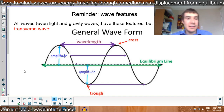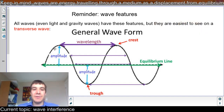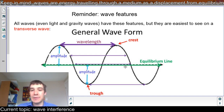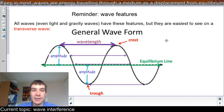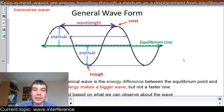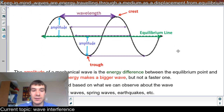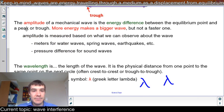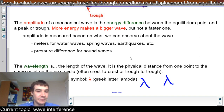Let's start with interference. As a reminder, we have these features of a wave: amplitude, wavelength, crest, trough, and an equilibrium. All waves are energy traveling through a medium with a displacement from equilibrium — whether it's a physical distance like in a transverse wave, or a pressure like in a sound wave. There's always a length to a sound wave, just like a water wave or a guitar string wave. Amplitude is the energy difference — more energy makes a bigger wave, but not a faster one. Sound travels at the speed of sound regardless of loudness.